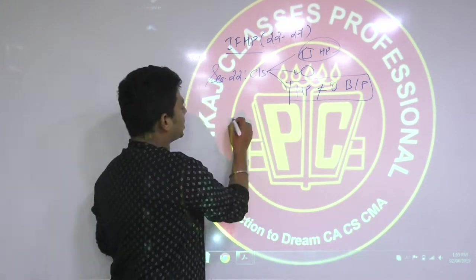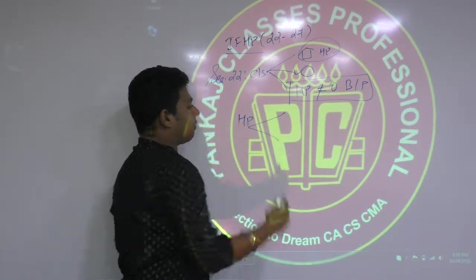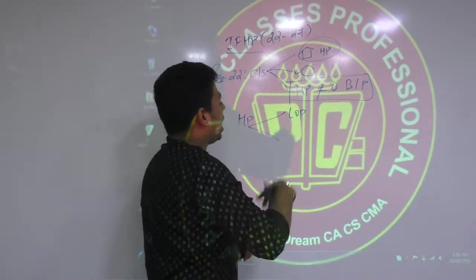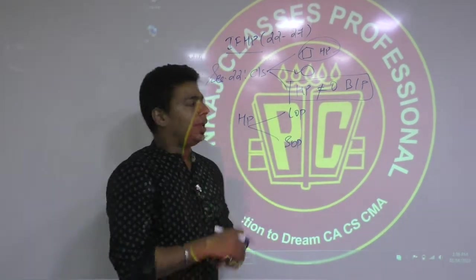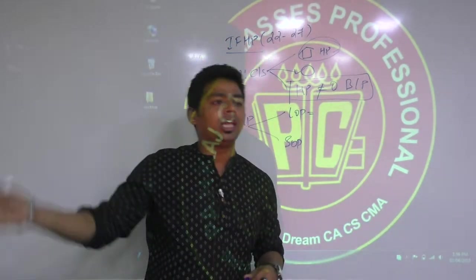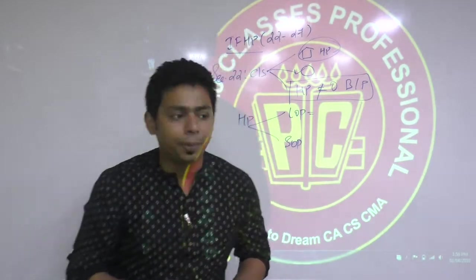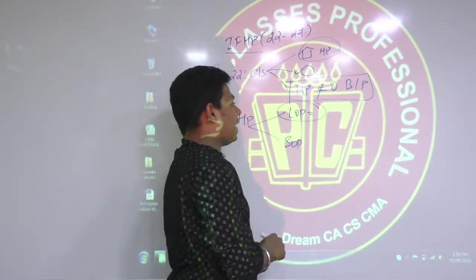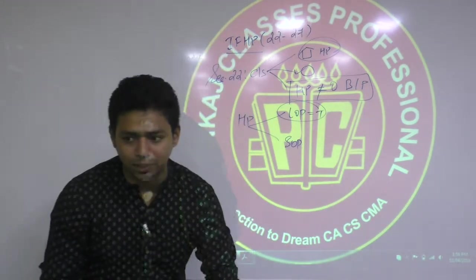We have discussed types of property. What types do we have? Let-out property and self-occupied property. Let-out property will be called let-out property if it was let out for any period during the previous year. Then the status will become LOP. Let-out property is always taxable.